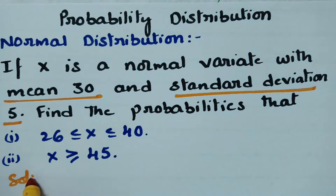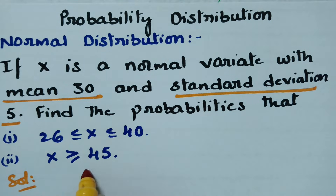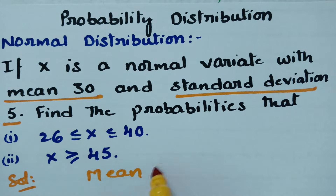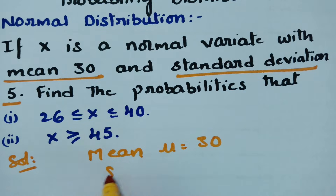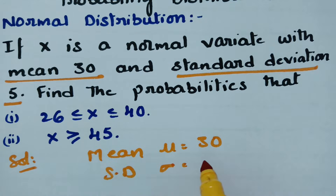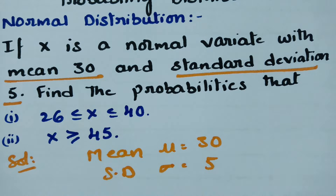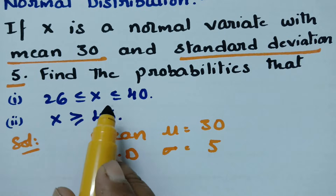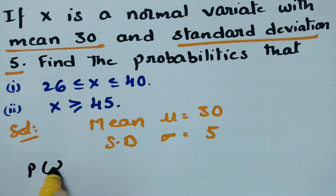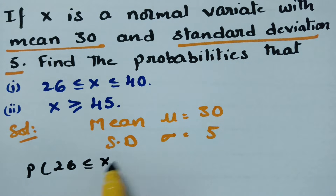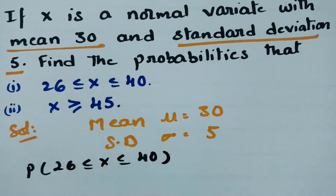In this solution, first of all what is given: mean mu is 30 and standard deviation sigma is 5. We have to find the probability for 26 ≤ x ≤ 40.